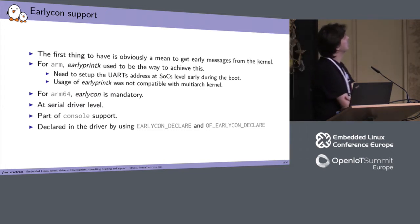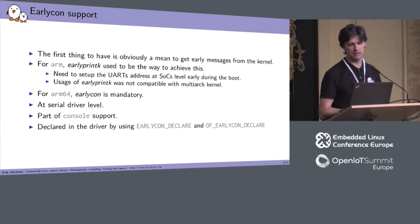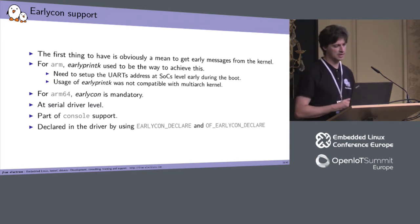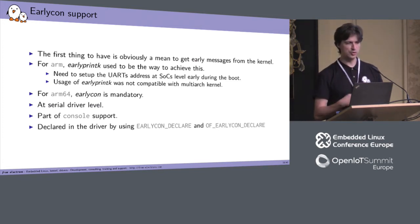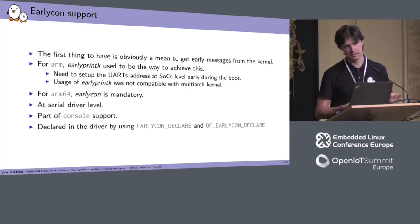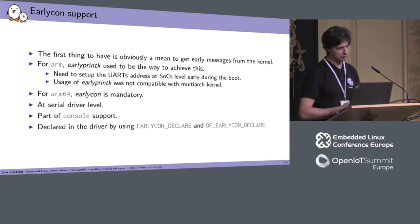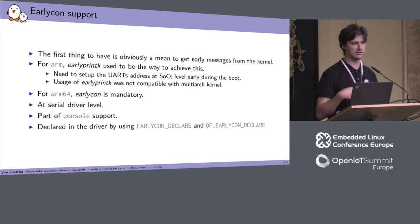The earlycon support is important because the first thing you want when you start bringing up a new SoC is to have early messages. For ARM32 it was early_printk which was used. For that, you need to set up the UART address at SoC level very early during the boot. When you use early_printk, you are not able to run the same kernel image on a different SoC because you have hard-coded the physical address of your UART. That's why for ARM64 it's no longer the case — you have to use earlycon. This is written at the serial driver level, as part of the console support, declared using EARLYCON_DECLARE or OF_EARLYCON_DECLARE.